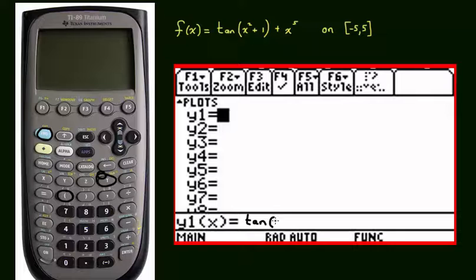Next, we want x squared. So I'll type in the variable x. But there is no x squared key, so I have to use the caret button to say x to the power of 2. And then, plus 1, end parentheses, plus x to the power of 5.